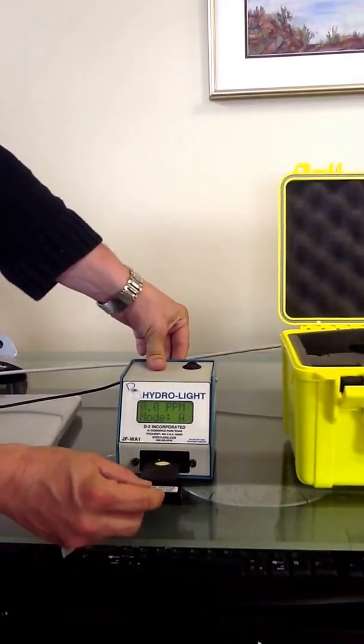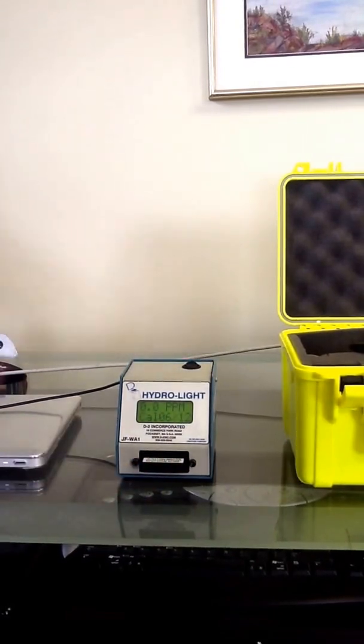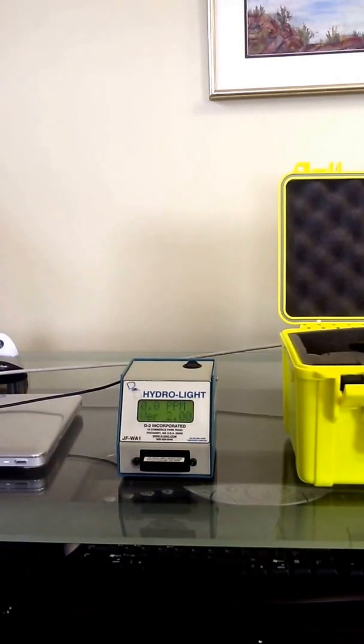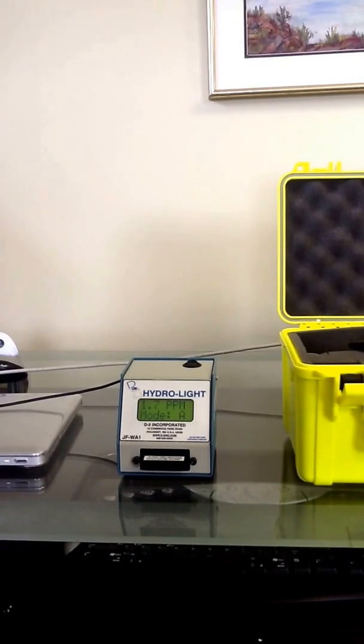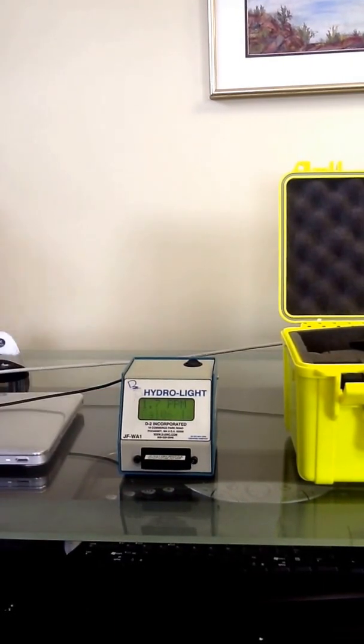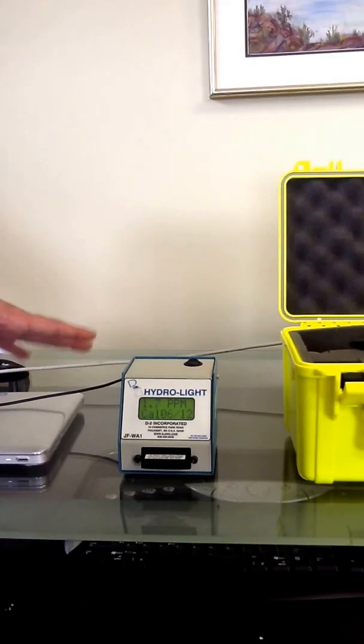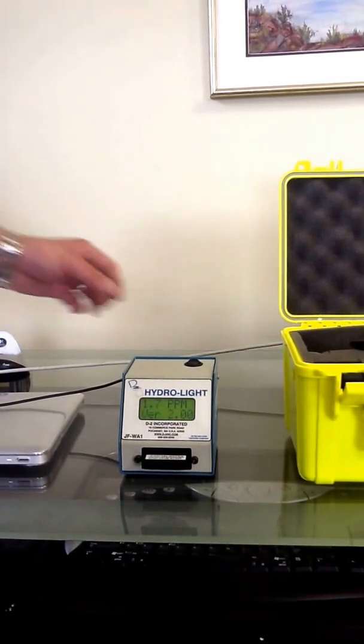So now we're going to test it by putting the low side in. So we should get 1.7, or at least within 0.3 of that. It takes about three seconds to take a measurement, and then you can see here, 1.7 parts per million. Every time the screen flashes, it's taking another measurement.